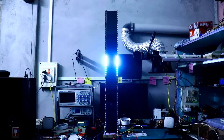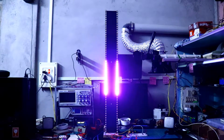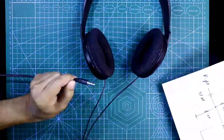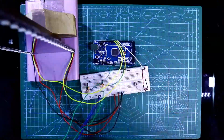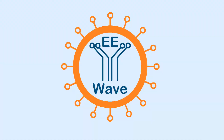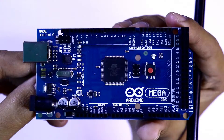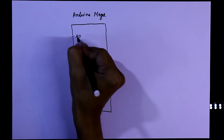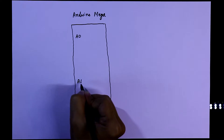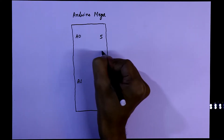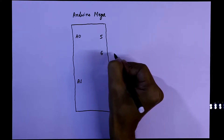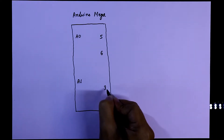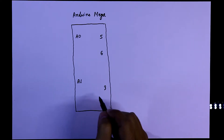Today we are going to design this VU meter, so let's get started. For this we need an Arduino Mega. We need analog pin 0 and analog pin 1 for input sound, digital pin 5 and 6 for LED signal, and pin number 3 for the push button.